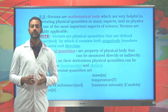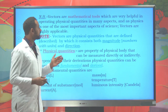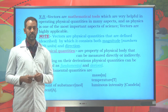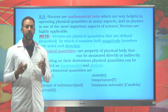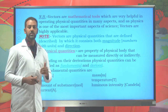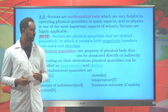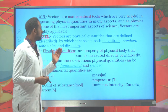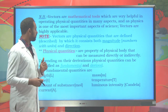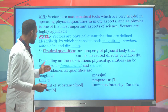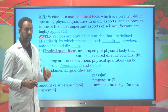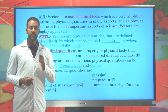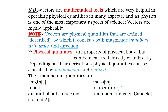First, let's try to define what vectors are. Vectors are mathematical tools which are very helpful in physics, especially when we are trying to discuss about different quantities. Physical quantities are anything which are measurable directly or indirectly. It's possible to classify physical quantities into two: according to their derivation as fundamental and derived, or depending on direction content as vector and scalar.